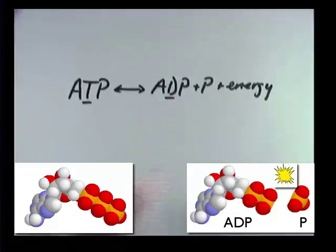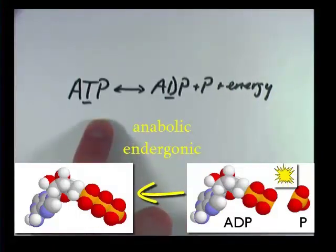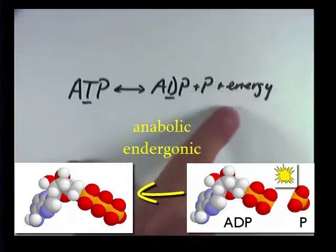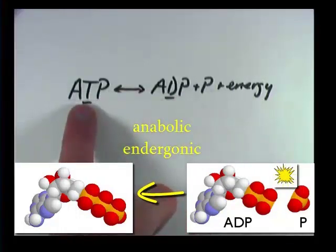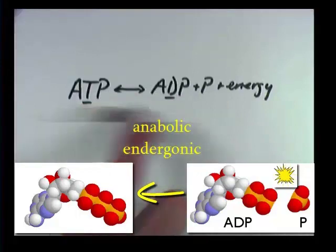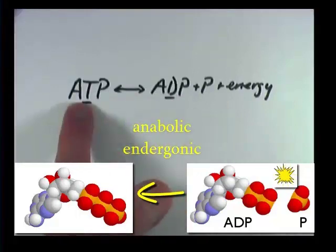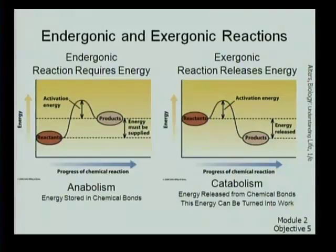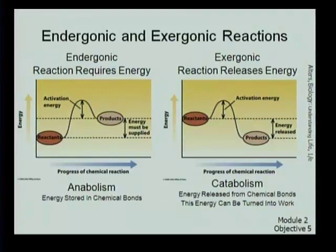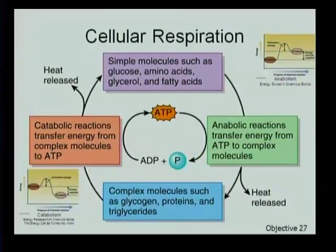If that equation proceeds to the left, that means we're putting more energy in. We're also putting little molecules together to get a big molecule, so that would be endergonic — putting more energy in — as well as anabolic, in that we did a building process. Make sure you can make that distinction as we talk about those types of reactions.